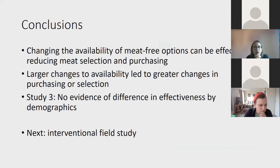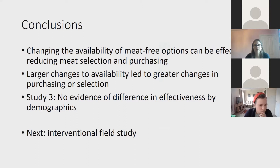To conclude: the evidence continues to suggest that changing the availability of meat-free options can be effective at reducing selection of dishes that contain meat. Larger changes to availability lead to greater changes in purchasing and selection, as we might expect. Study three interestingly suggested no evidence of a difference in effectiveness across different demographic characteristics, so it might be a promising intervention to change behavior across the population. However, we still don't have evidence from field studies where we've been able to randomise sites in a more controlled intervention — that would be the next step. Thank you.